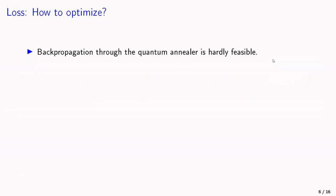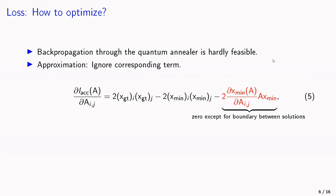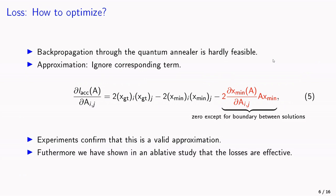So how to optimize over these losses? The problem is that backpropagation through the quantum annealer is hardly feasible. So we have the approximation that we ignore the corresponding term that is in charge for this backpropagation. This term is also zero, except for boundaries between solutions. The experiments confirm empirically that this is a valid approximation, and we have also shown with an ablative study that the losses are effective.